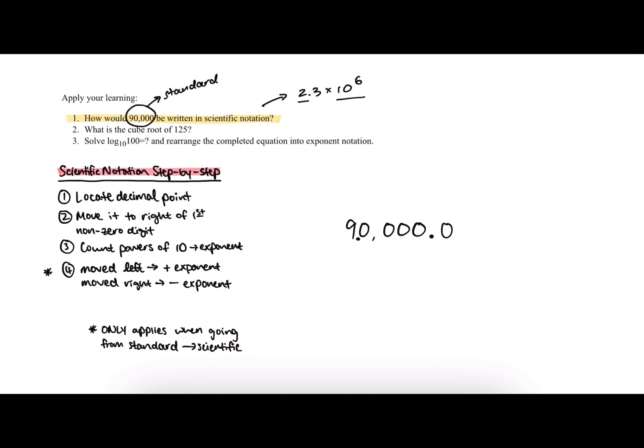The next step says to count the powers of 10, and this will become our exponent. To count the powers of 10, we just count how many places over we moved, since each place represents another power of 10. So we moved one, two, three, four powers of 10 over to our new location. So far that gives us 9.0 times 10 to the fourth.